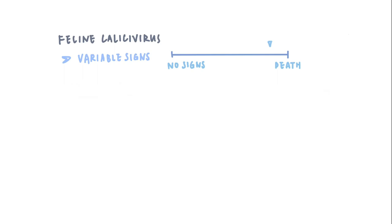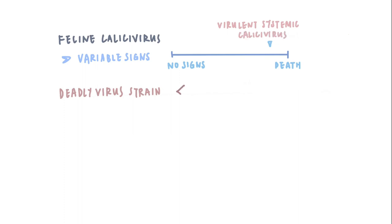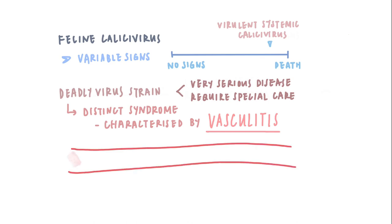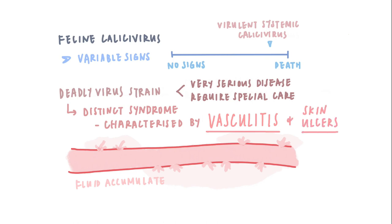If your cat is infected by the deadly feline calicivirus strain, your cat may get the virulent systemic calicivirus, which is a very serious disease and requires special care. This is a distinct syndrome characterized by vasculitis, meaning inflammation in the vessels, and hence fluid may accumulate in different places in the body. Sometimes skin ulcers may also occur. This kind of feline calicivirus is deadly, and 55% of all cats that get this virus die.